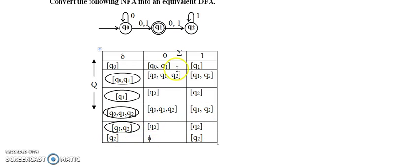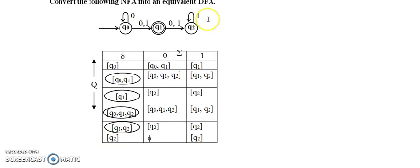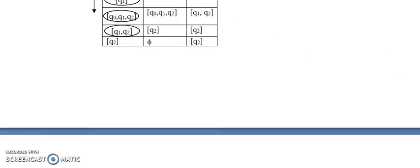For Q2: Q2 with 0 — I don't have a transition, so it maps to ∅. Q2 with 1 gives Q2. Now I am getting old repeated states, so I will stop the procedure here. For the final states in DFA: the start state of DFA is Q0. For final states, see {Q0, Q1} — at least one state (Q1) is final in NFA, so this becomes final. Q1 is obviously final in NFA, so it is final in DFA. {Q0, Q1, Q2} contains Q1 which is final, so it is also final. {Q1, Q2} contains Q1, so it is also final. Q2 is not final in NFA, so it is non-final in DFA.